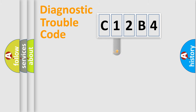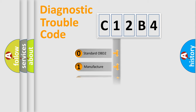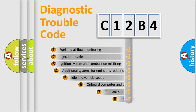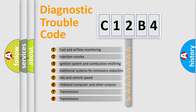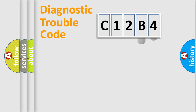This distribution is defined in the first character of the code. If the second character is expressed as zero, it is a standardized error. In the case of numbers 1, 2, or 3, it is a more specific expression of a car-specific error. The third character specifies a subset of errors. The distribution shown is valid only for the standardized DTC code.